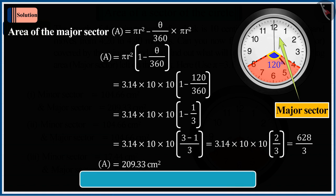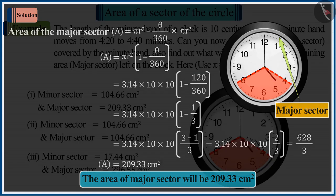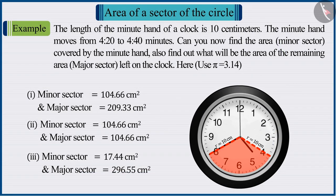Therefore, we can say that the area of major sector will be 209.33 square centimeters. Hence, option 1 is the correct answer.